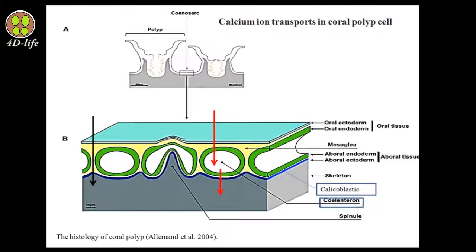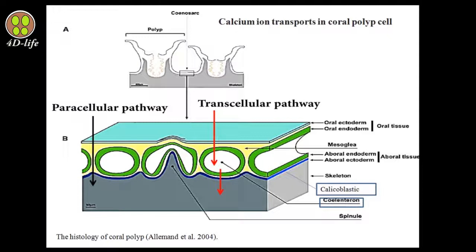You can see the calicoblastic layer in this picture highlighted in blue, which I mentioned is responsible for skeleton formation. The coelenteron acts as a temporary place for the uptake of ions and their transport to the calicoblastic layer. Ion transport in the epithelium is carried out by two mechanisms: the paracellular and transcellular pathways.